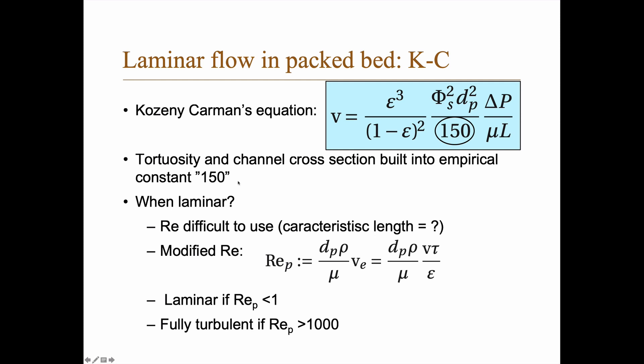Now the tortuosity and channel cross-section are built into this empirical constant 150. So you can actually derive this equation just from theoretical considerations assuming that you have a perfect circular cross-section and actually tortuosity of the, that is the square root of 2, 1.4.